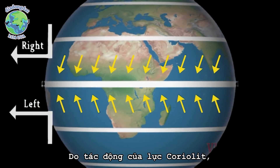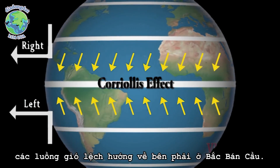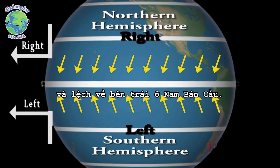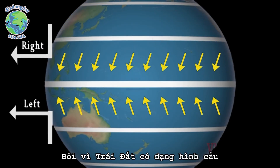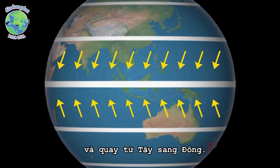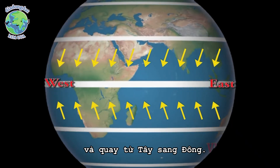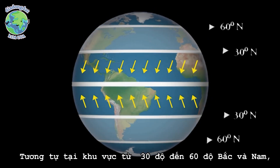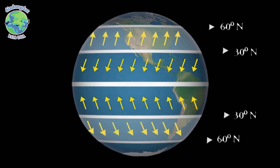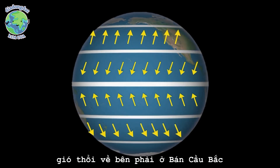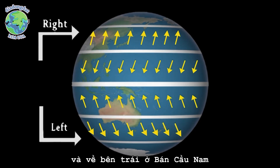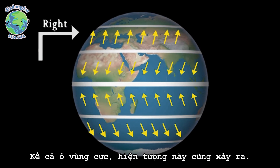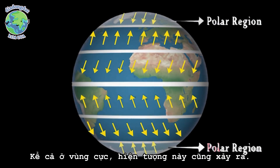This is described as the Coriolis effect. The winds bend to the right and left in the northern and southern hemispheres respectively because the Earth is spherical in shape and rotates from west to east. In the same way, in between 30 and 60 degrees north and south, the wind bends towards right and left in the northern and southern hemispheres respectively. Even at the polar region the same phenomenon can be seen.